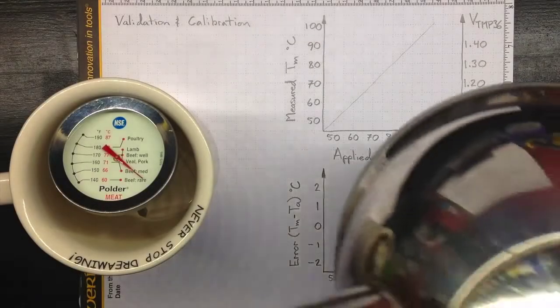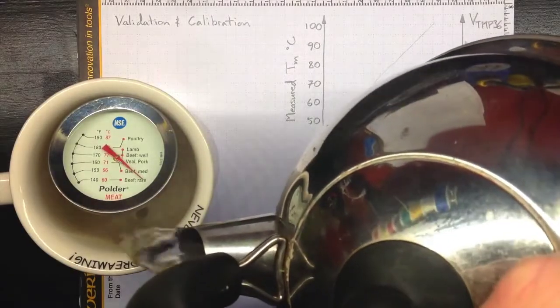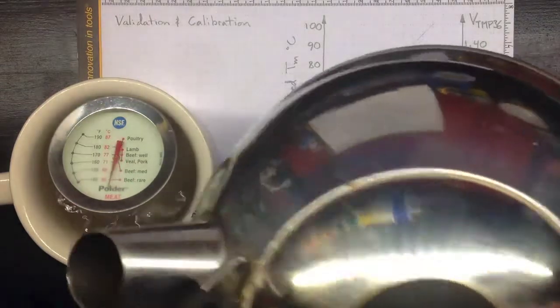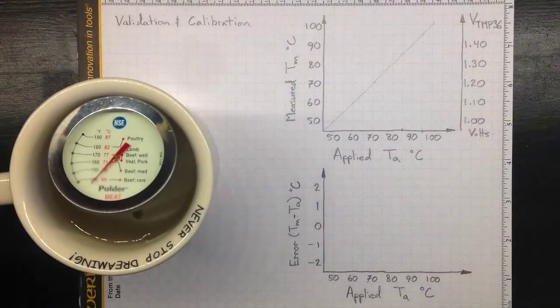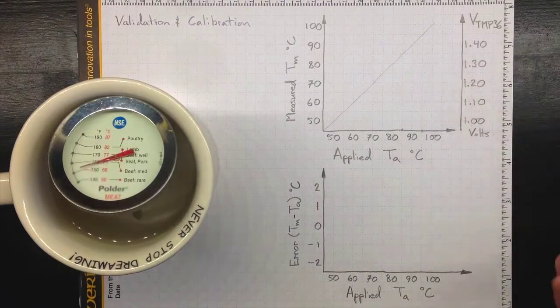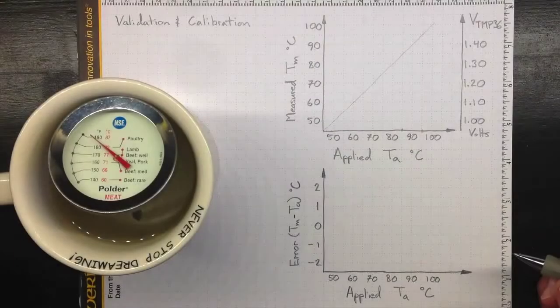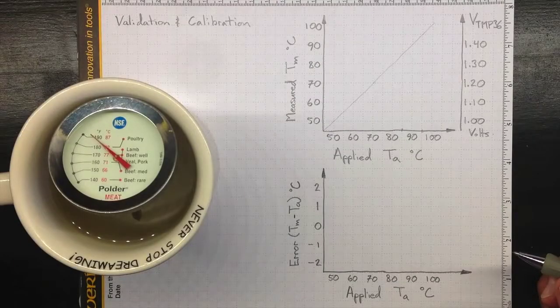I've got my kettle, it's just boiled and I'm pouring water into the cup. The indicator rises fairly quickly to start with, and then it slows down. Let's see where it gets to. Still moving, but pretty slowly.